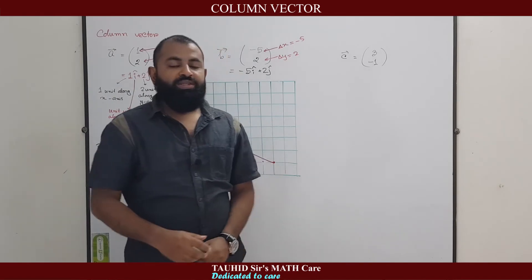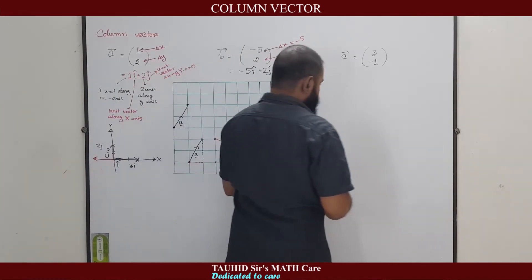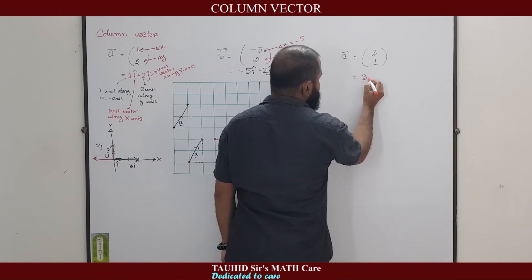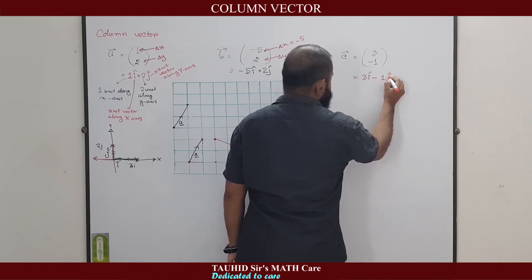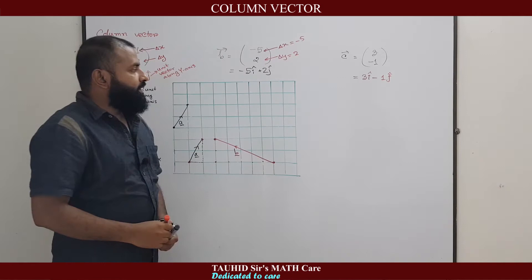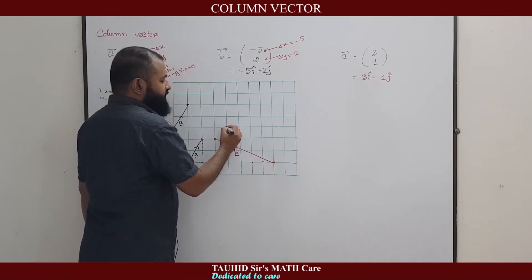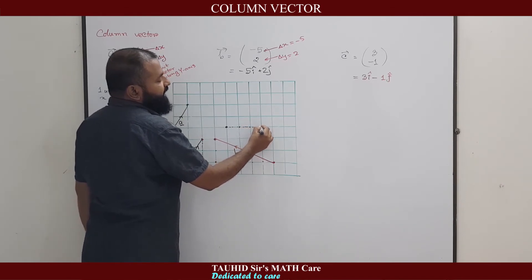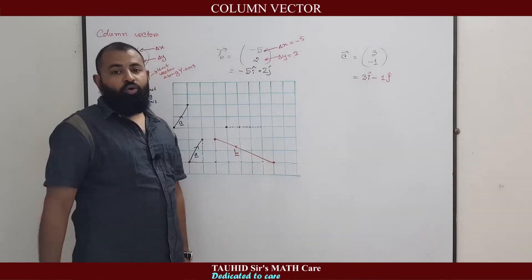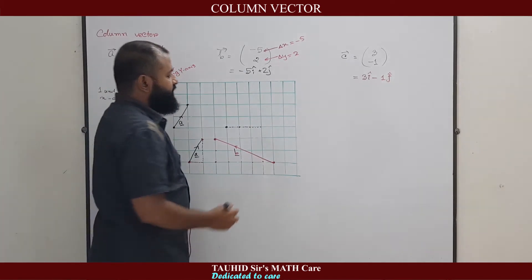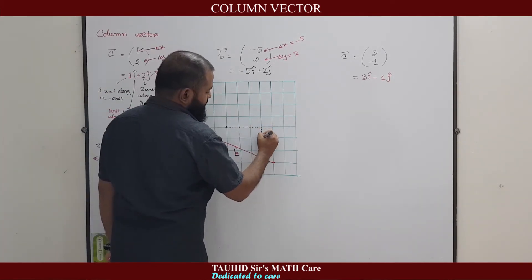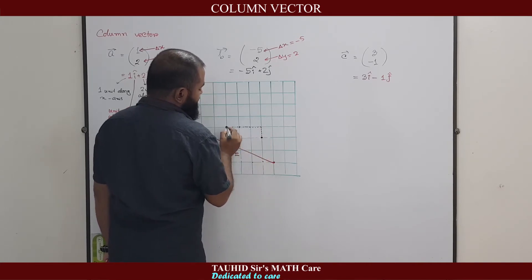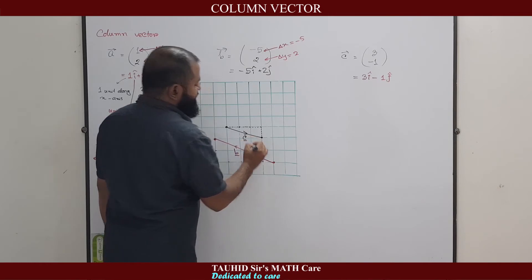Now the vector c is 3 minus 1. That means it can be written as 3i minus 1j. That means from the initial point, it will move three units along x-axis, that means positive x-axis, right side: 1, 2, 3. And it will move one unit along negative y-axis. Negative y-axis means downside. So this vector is c vector.